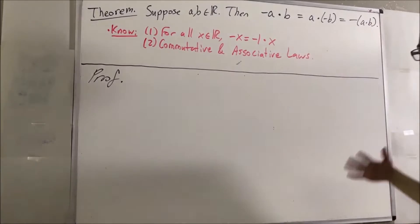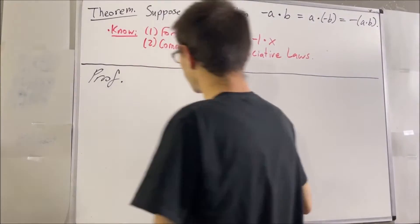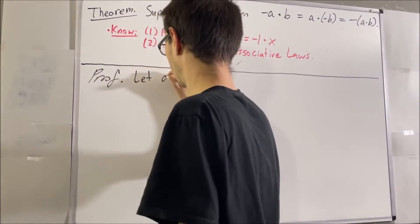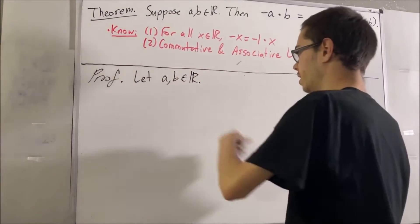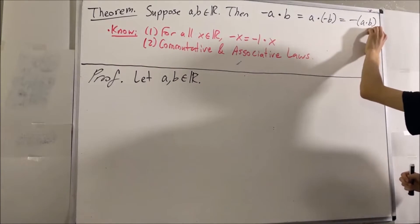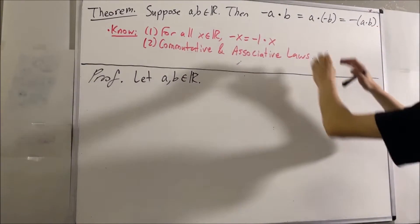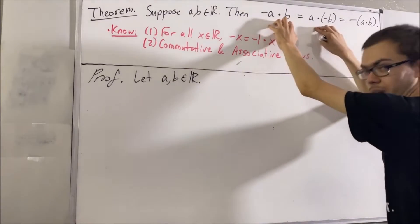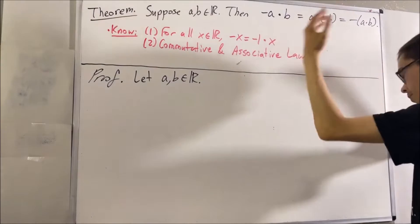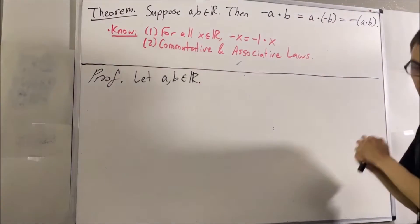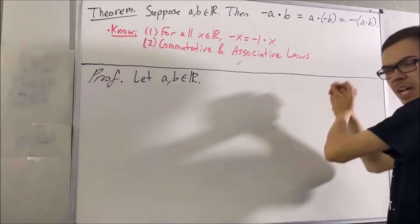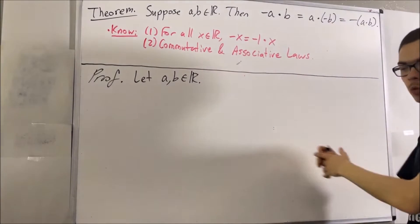So now let's get into proving the theorem. To start out the proof, let's give ourselves two real numbers A and B. Our goal with these two real numbers is to prove that this is true. We're first going to establish that the first two expressions are equal, and after that we're going to establish that the last two are equal. And if we do that, all three will be equal to each other. Let's start by showing that the first two are equal, and to do that, we're going to establish a chain of equalities.